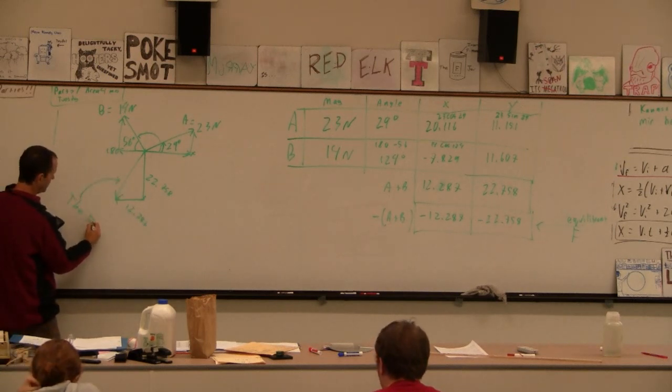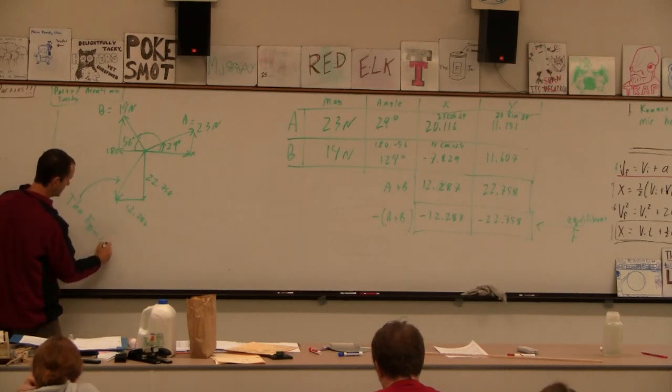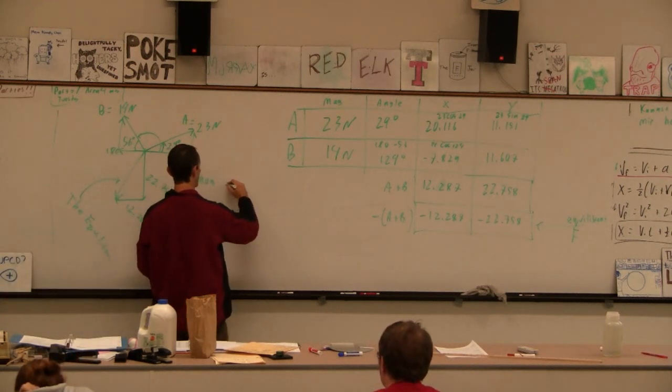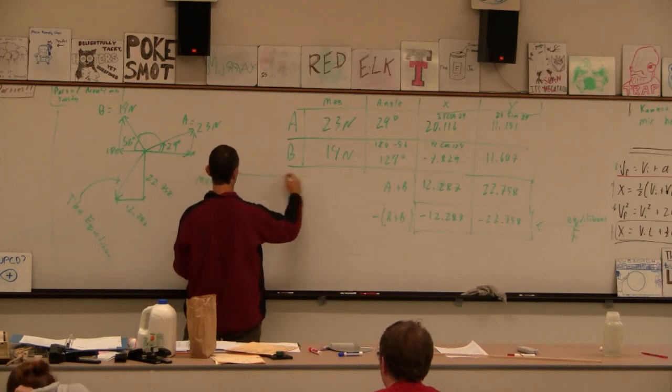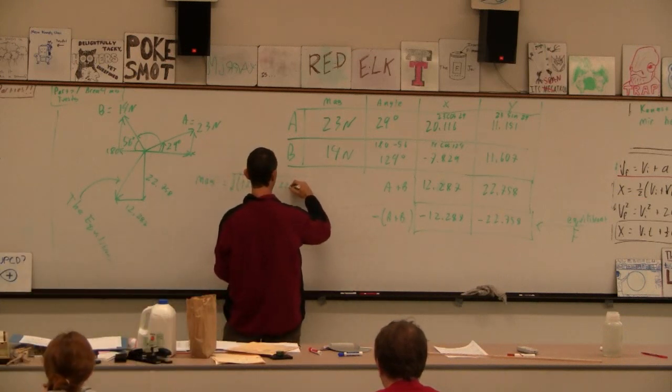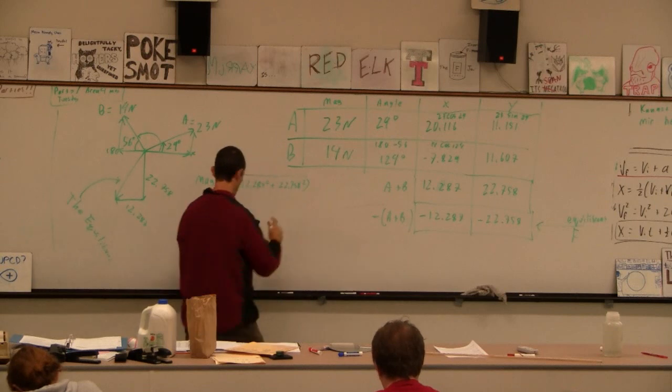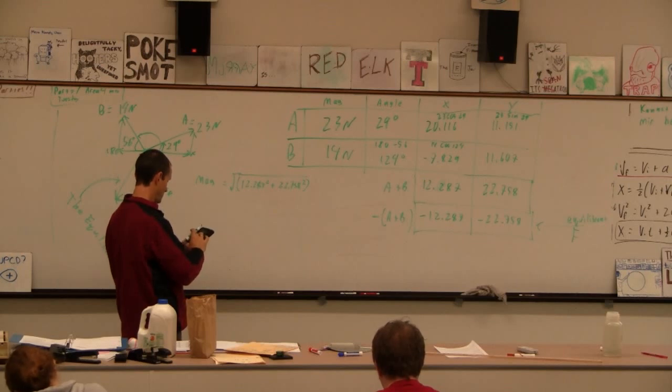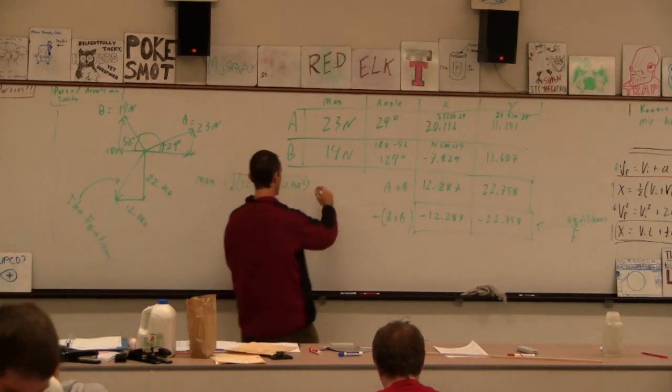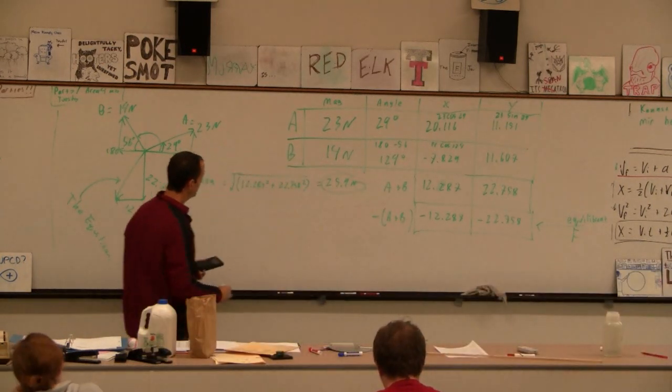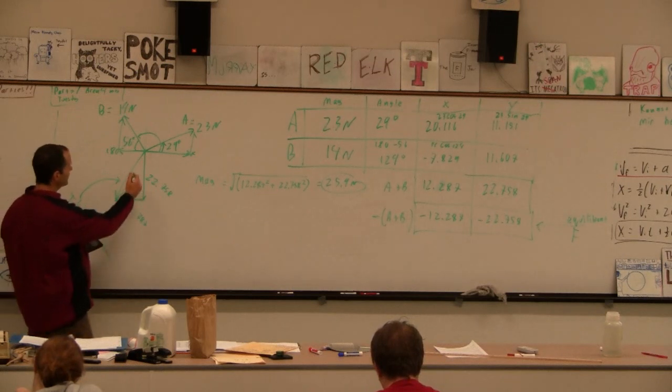The equilibrant has a magnitude of 12.287 squared plus 22.758 squared, and that's 25.9 newtons. I know we only have like two sig figs but there's three. And then we could find this angle here.